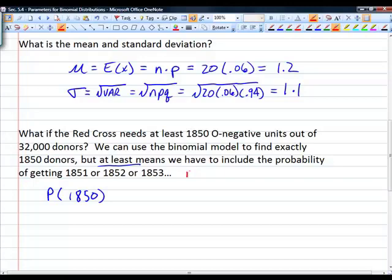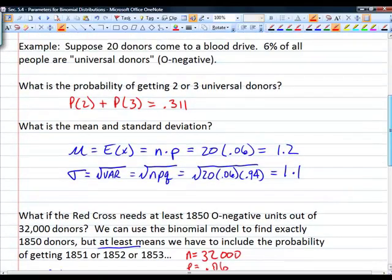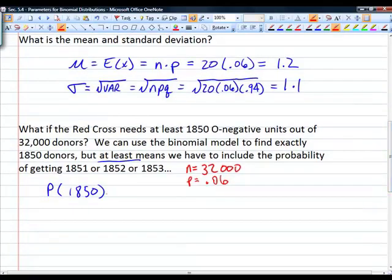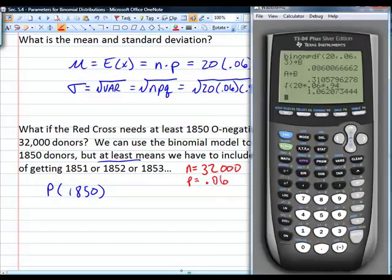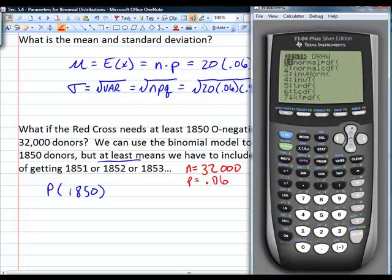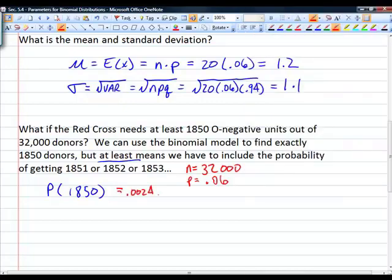First I'm going to find the probability of getting exactly 1,850 blood donors. For this problem, n equals 32,000 and p is still 6%. I can do this on my calculator by going to 2nd, vars, binomial PDF, and entering 32,000 for sample size, 0.06 for probability, and 1,850 for the number of successes. That equals 0.0024. There is a 0.2% chance of getting exactly 1,850 O negative donors out of 32,000.